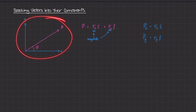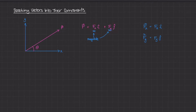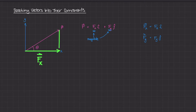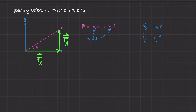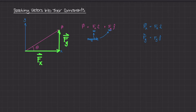Looking back at this diagram, we have this force vector F, and we know that F is comprised of Fx and Fy. The force components of F are one along the x-axis, which is Fx, and a y force vector, which is Fy. You can see that if we add the Fx vector and the Fy vector, we get the F vector. This makes a triangle with angle theta.